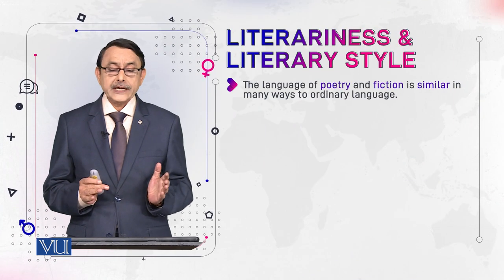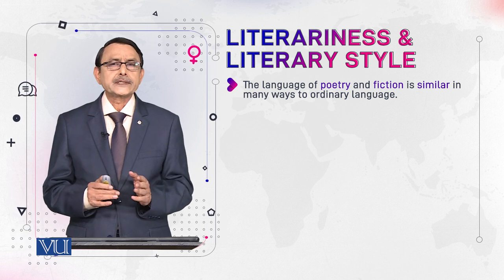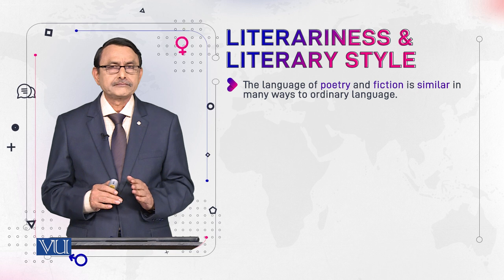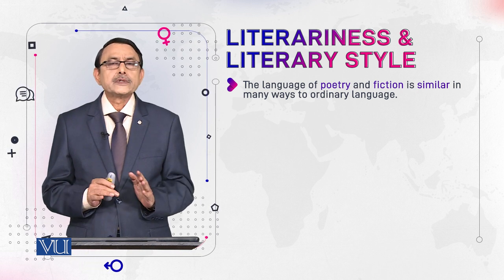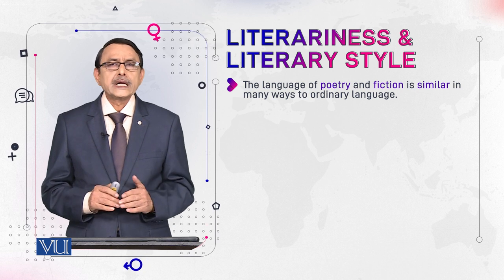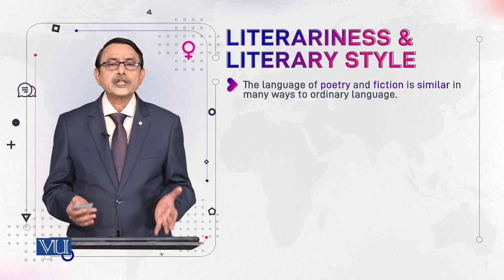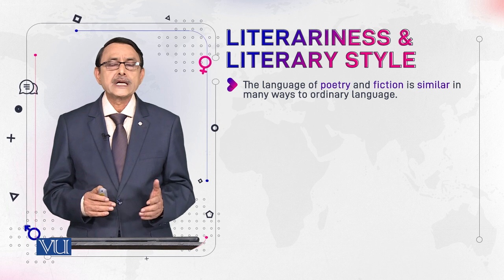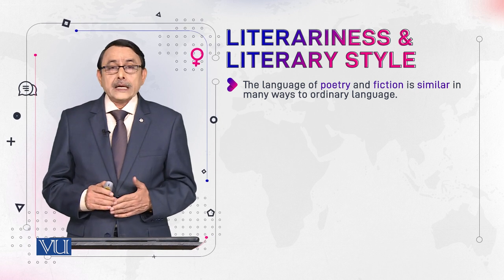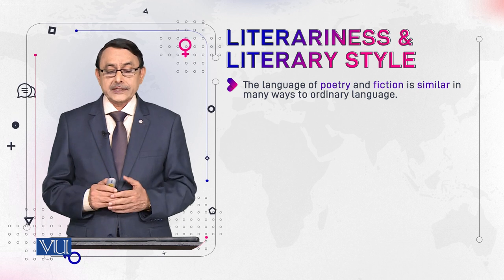We are now familiar with what style is; now we will come to our particular topic. What is literariness and what is literary style? The language of poetry and fiction — all prose is sometimes called fiction — so I have not used the terms for drama or prose separately. All genres are represented; all types of literary texts are represented by two terms: poetry and fiction, which is similar in many ways to ordinary language.